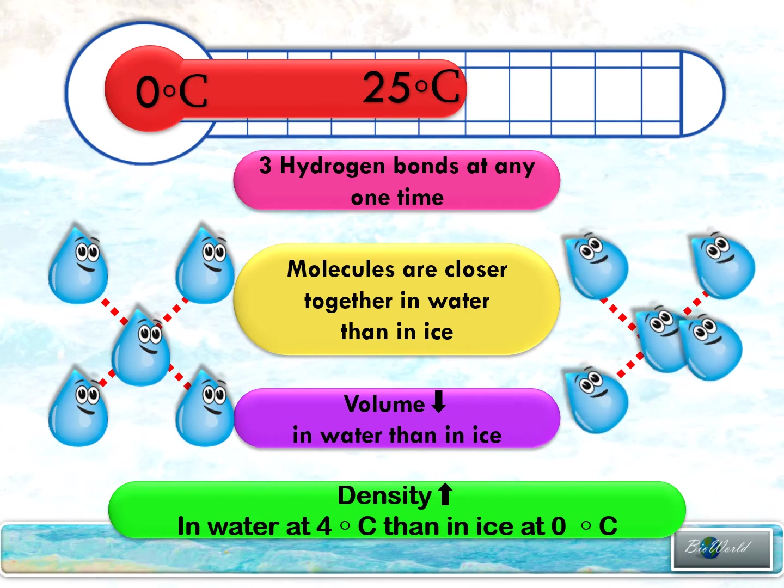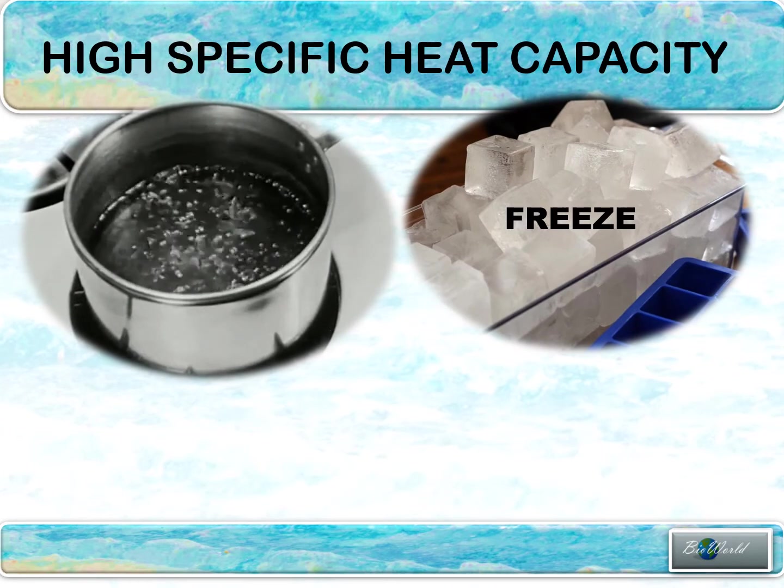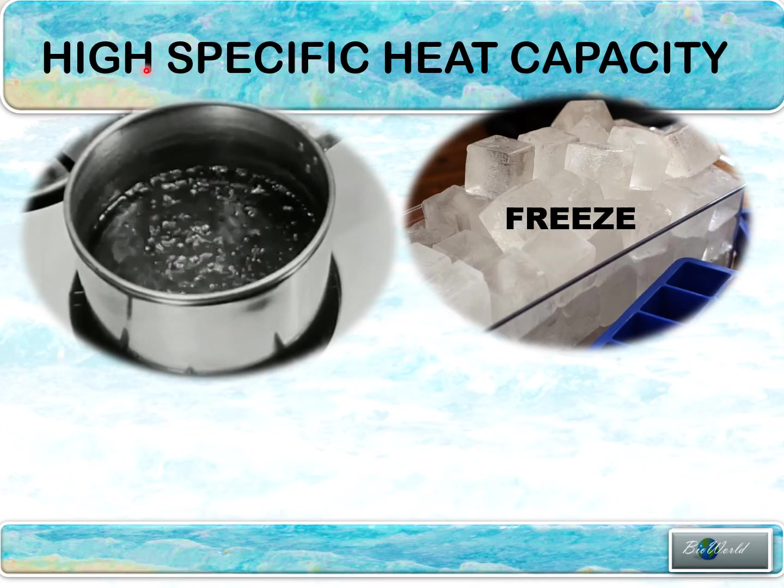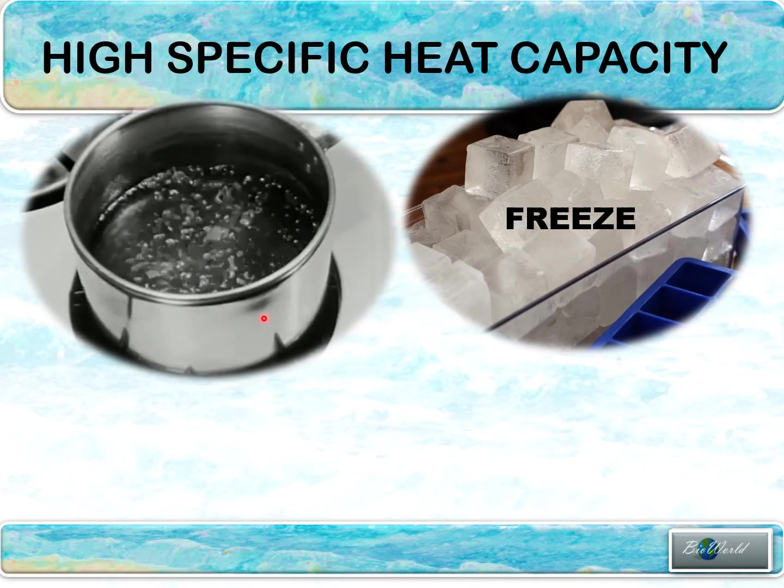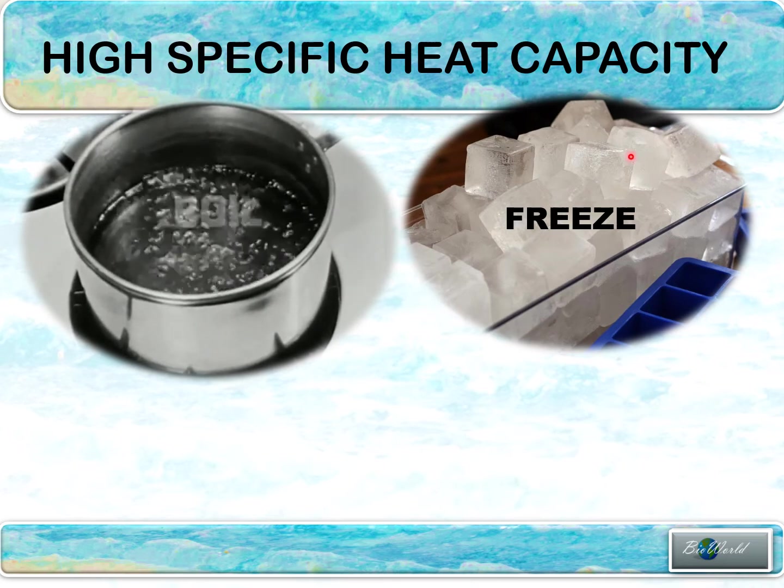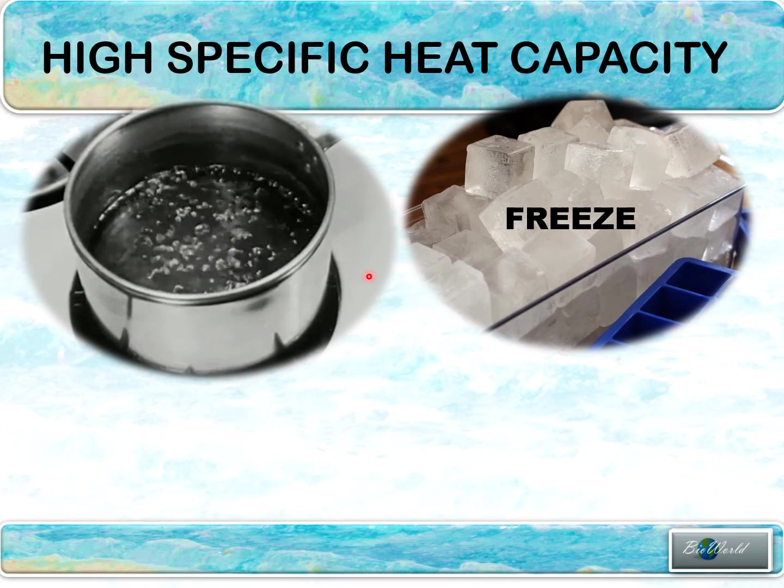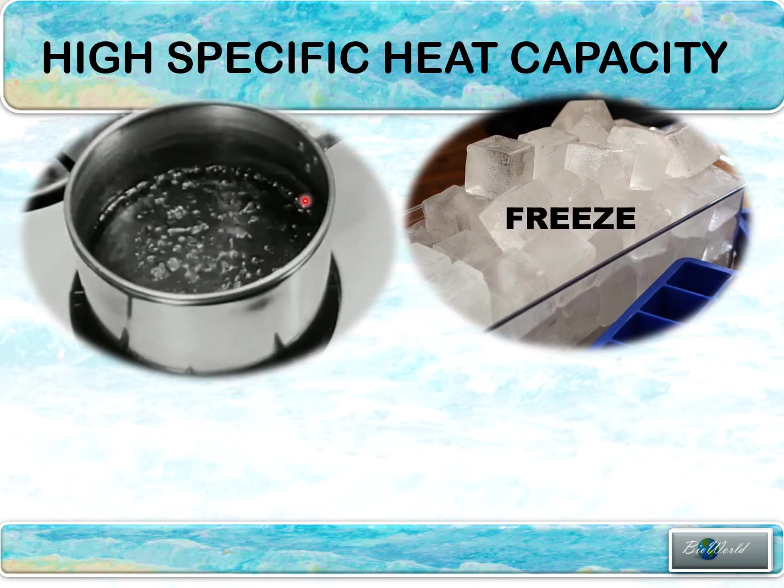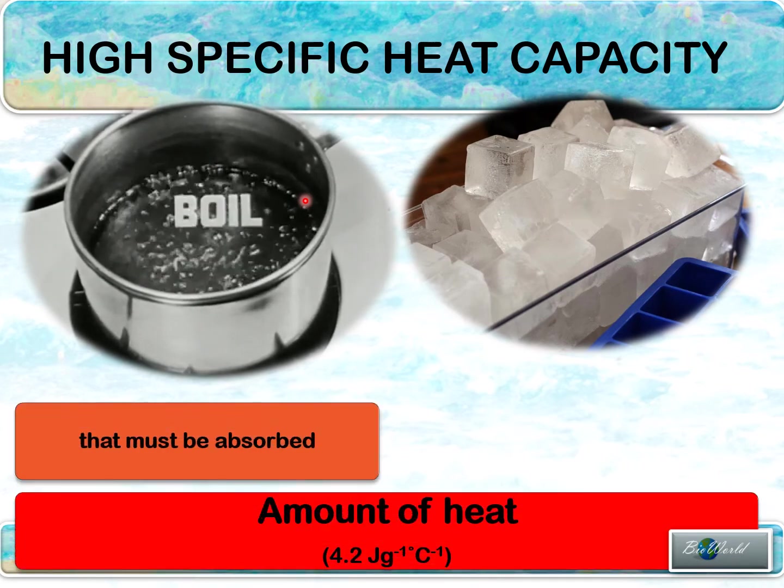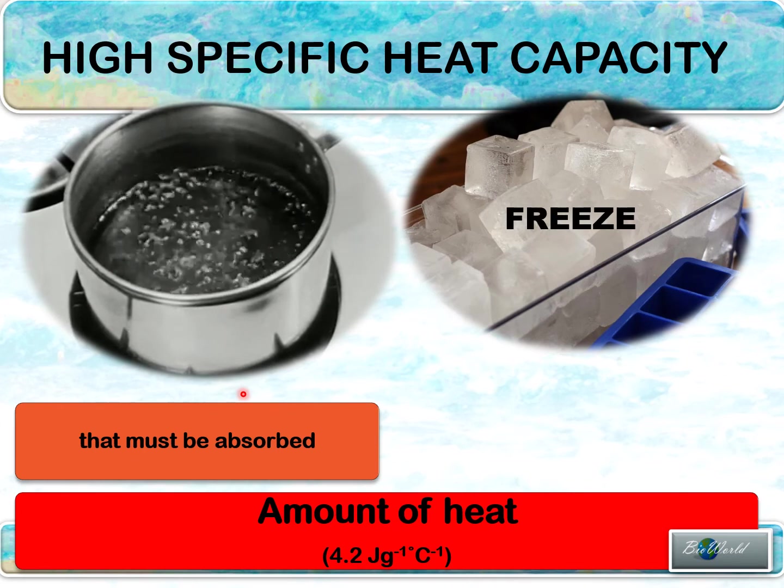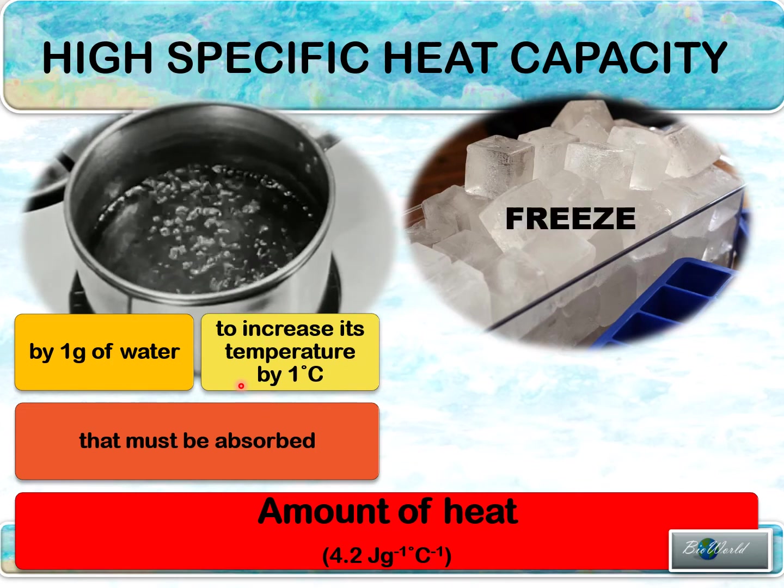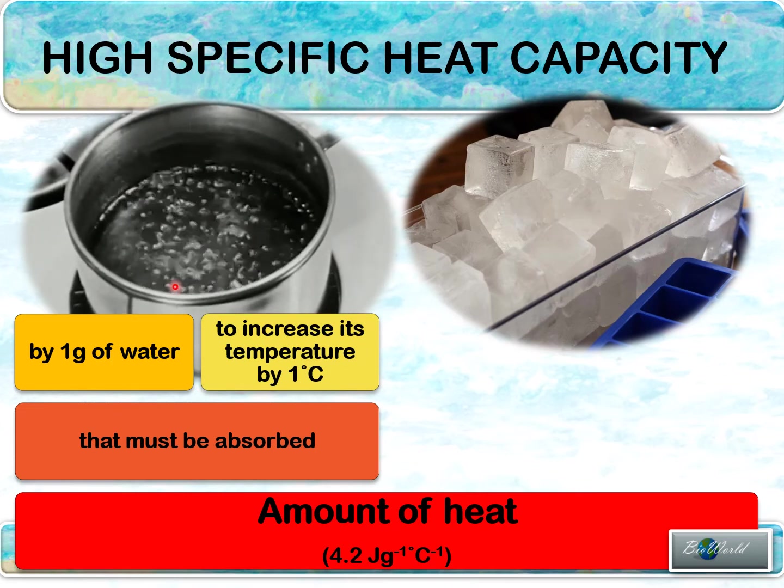Let's move on to the next physical property. The next physical property is high specific heat capacity. We can use this property when talking about water boiling or when water is freezing. Let's understand the definition first. Specific heat capacity refers to the amount of heat that must be absorbed by one gram of water so that the temperature can increase by one degree Celsius. This is in reference to water boiling.